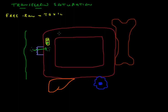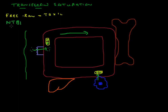The transferrin molecule moves around the body to deliver iron where it is needed, for instance in the bone marrow. It can also pick up iron from macrophages, where iron is often recycled out of old red blood cells. You can get some iron that is not bound to transferrin — we call this non-transferrin bound iron or NTBI — and this is a dangerous form of iron because it can cause damage to cells.